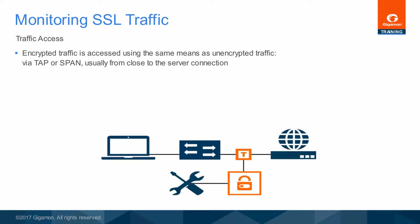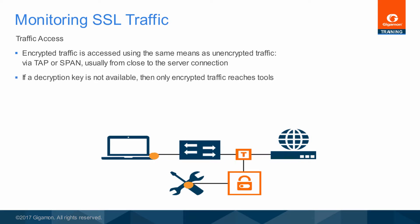Encrypted traffic is obtained from the network using the same span or tap access as unencrypted traffic. Traffic may be collected at any point between client and server; however, traffic is typically collected at the server end so that all conversations are made available to the monitoring and security tools. Received traffic is forwarded to monitoring and security tools, but without the private key, this traffic is still encrypted.